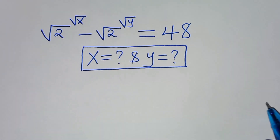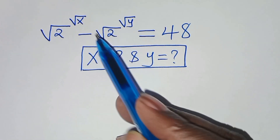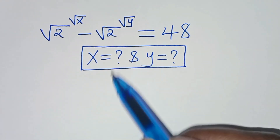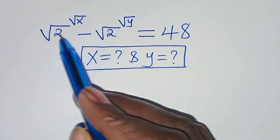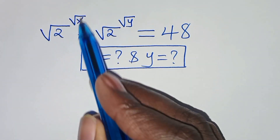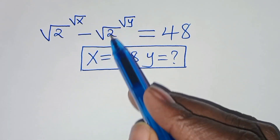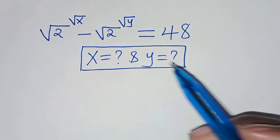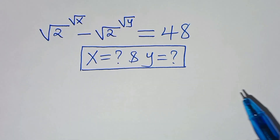Hello everyone, you are welcome to solve for the value of x and y, given this nice square root math problem, which is the square root of 2 raised to the power square root of x, minus square root of 2 raised to the power square root of y, this is equal to 48.